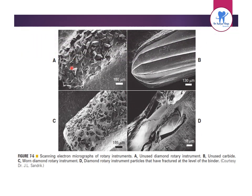This picture shows scanning electron micrographs of rotary instruments: an unused diamond, a used diamond, and diamond particles fractured at the level of binder. Excessive pressure, high rotational speeds, and the type, shape, and condition of the cutting instrument may all increase generated heat.